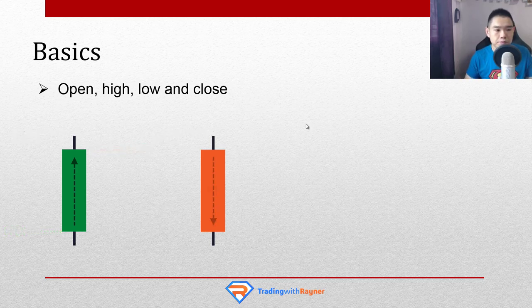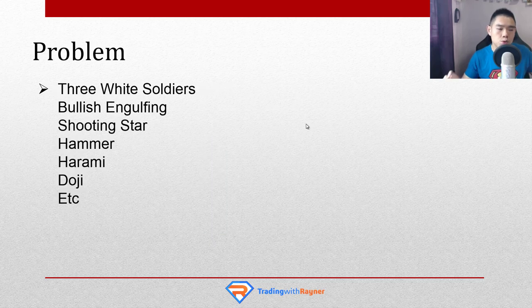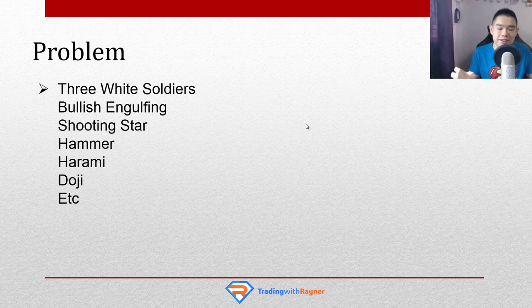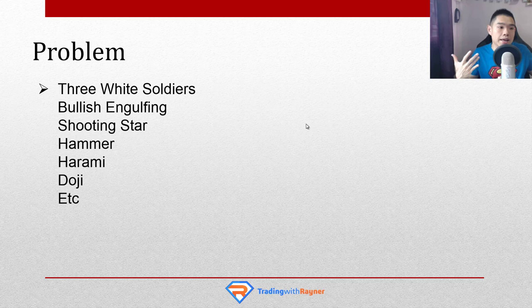Here's the thing — for those of you who have dabbled in candlestick patterns for a while, you will face this problem. There are so many patterns out there: three white soldiers, bullish engulfing, shooting star, hammer, harami, doji, etc. If you memorize all these weird naming patterns, it's a matter of time before you get overwhelmed. And really, memorizing patterns is not the way to trade the markets. This is a problem I faced personally, and I suppose many traders would encounter something similar as well.